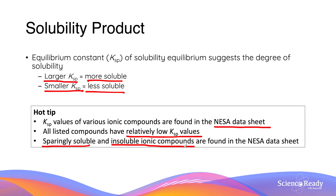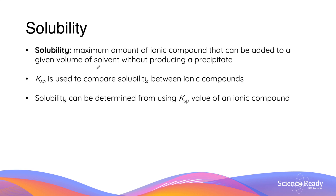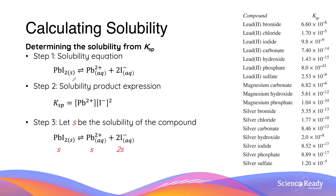This can be quite useful if you forget your solubility rules, as all Ksp values of soluble compounds such as sodium chloride are not given in the NESA data sheet. The main concept solution equilibrium revolves around is the solubility of ionic compounds. The term solubility simply refers to the maximum amount of ionic compound that can dissolve in a given volume of solvent without producing a precipitate. Apart from comparing solubility of various ionic compounds, Ksp values can also be used to precisely calculate their solubility.